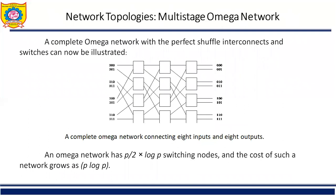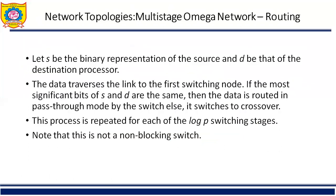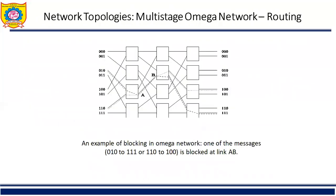A complete omega network with perfect shuffle interconnects and switches is shown in this figure. The omega network has (P/2)·log P switching nodes, and the cost of such a network grows as P·log P. For routing, let S be the binary representation of the source and D be that of the destination processor. If the most significant bits of S and D are the same, the data is routed in pass-through mode; otherwise it goes through cross-through. This process repeats for each of the log P switching stages. Note that this is not a non-blocking type of switch.